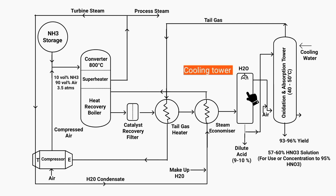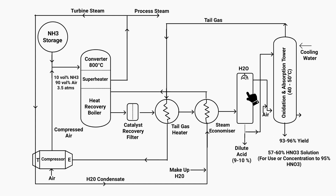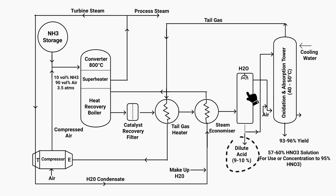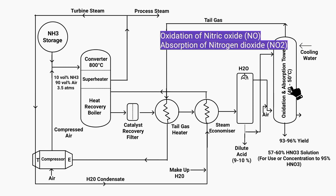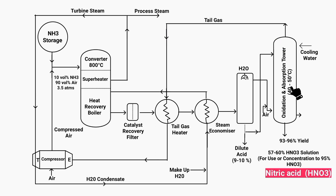A cooling tower performs quenching, where the temperature of the hot nitric oxide gas is reduced with the help of cooling water. Here the temperature of the gas drops significantly, and a dilute acid solution — containing 90% water and 10% acid — is also obtained. The oxidation and absorption tower then carries out oxidation of nitric oxide and absorption of nitrogen dioxide, and nitric acid is obtained from here.